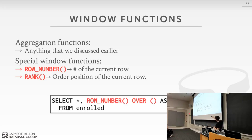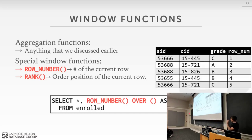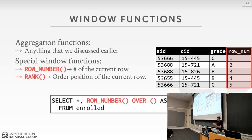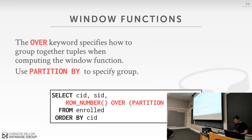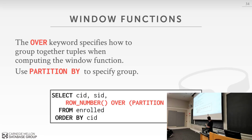Just like GROUP BY, window functions can group tuples using PARTITION BY inside the OVER clause. For example, generating row numbers partitioned by course ID groups the results into per-course sequences. You can also use ORDER BY inside the OVER clause to define the ordering of tuples before applying the window function — essentially doing the same thing as the previous example but controlling the sort order.